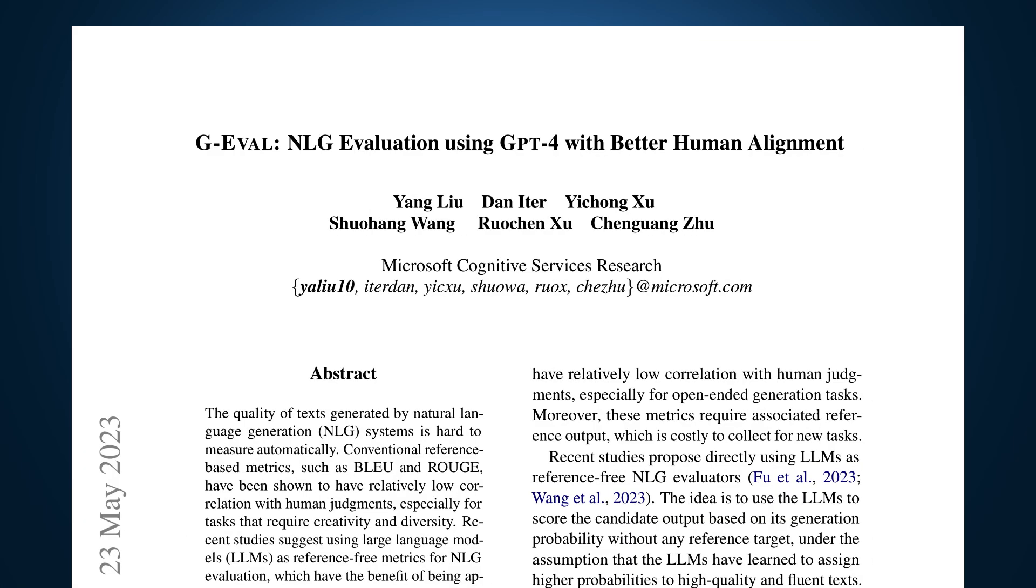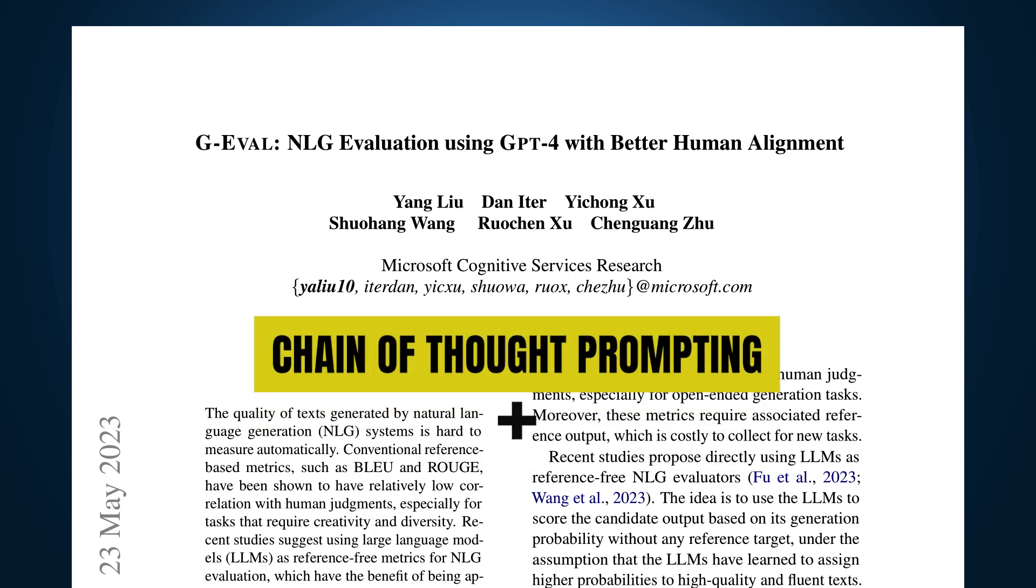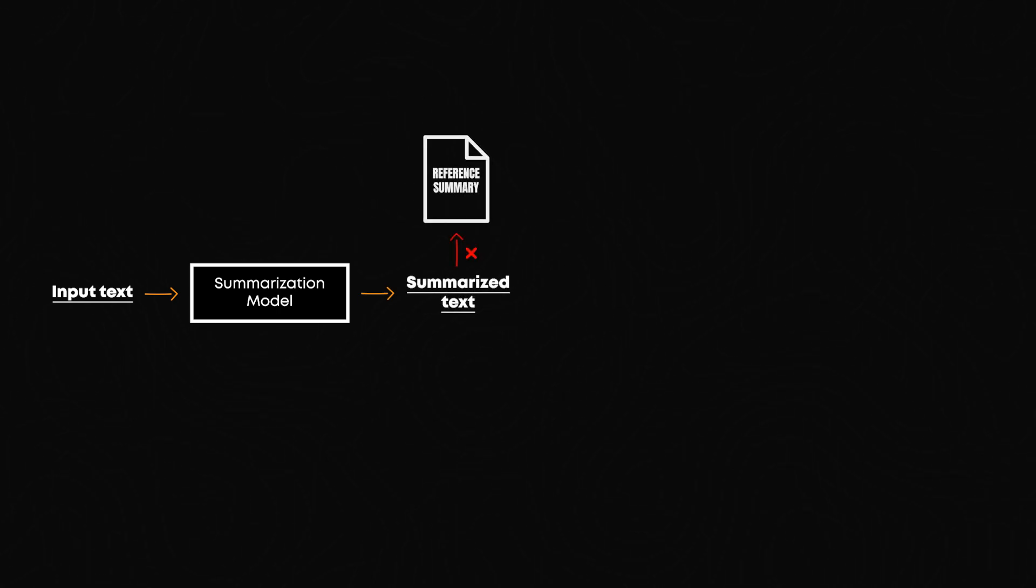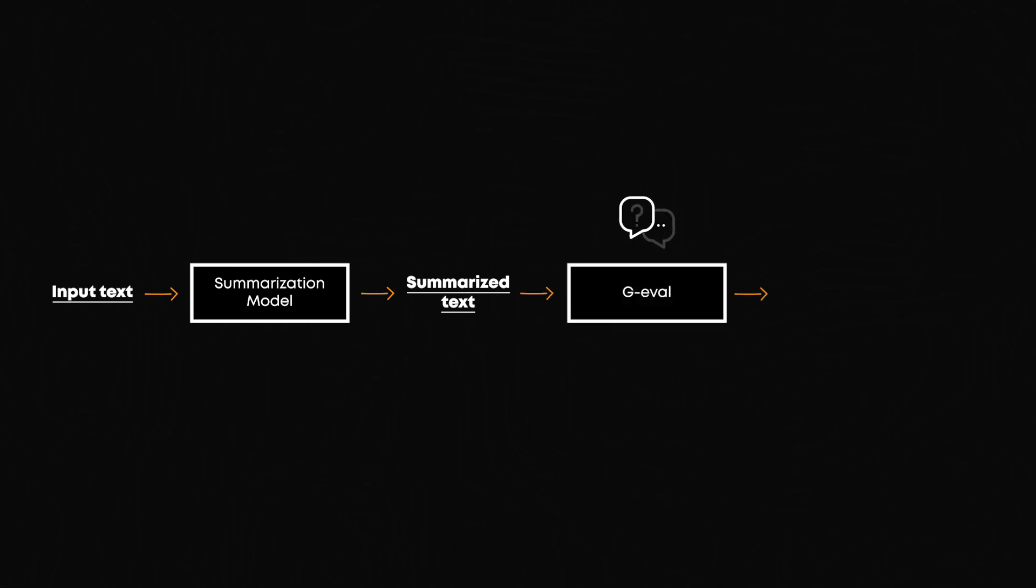Recently, a new model called GEVAL has been introduced. It uses LLMs in a unique way combining chain of thought prompting with a form-filling technique. For example, suppose we want to evaluate how well a model summarizes a piece of text. Instead of just comparing the generated summary to a reference summary using the rouge metric, GEVAL would ask the model to explain its reasoning for each part of the summary. For instance, it might prompt, why did you include this specific detail? The model would then provide its reasoning.